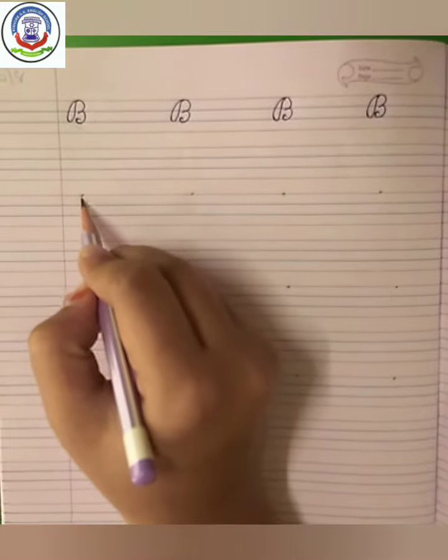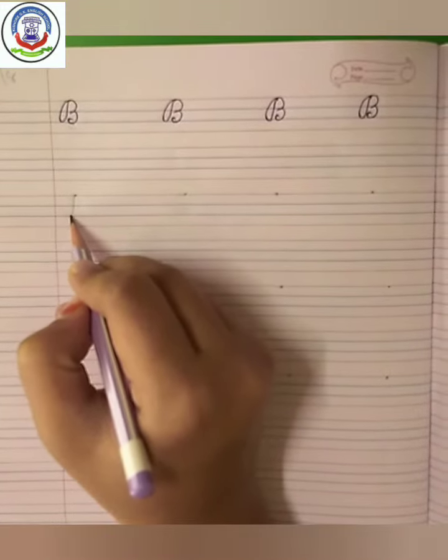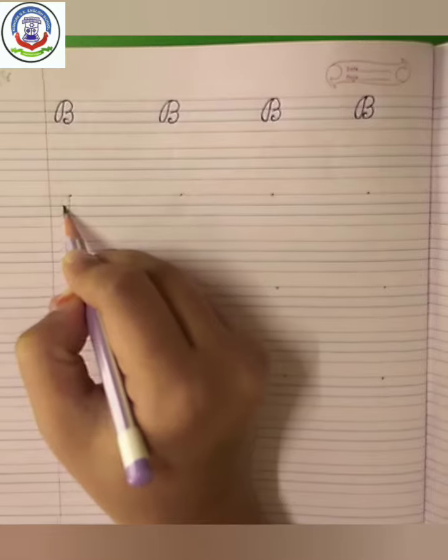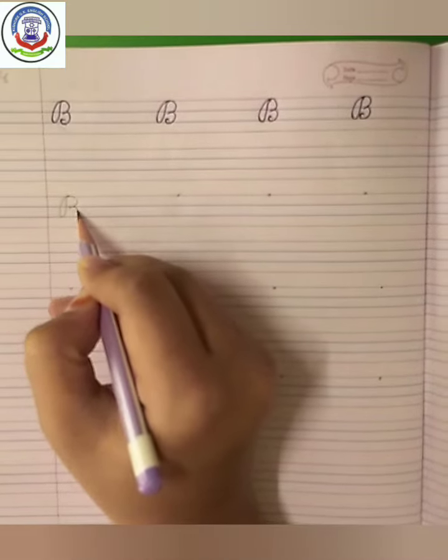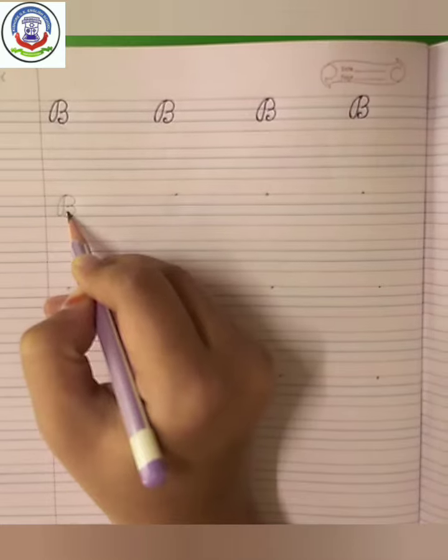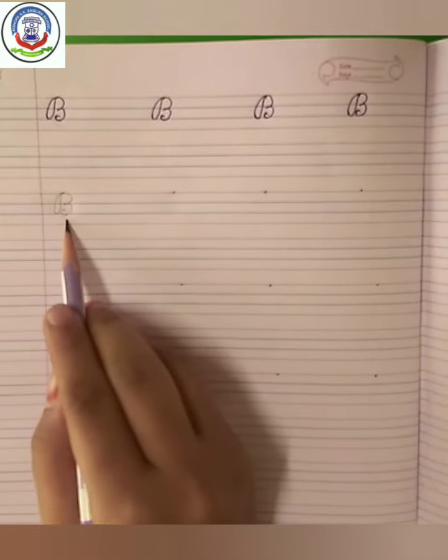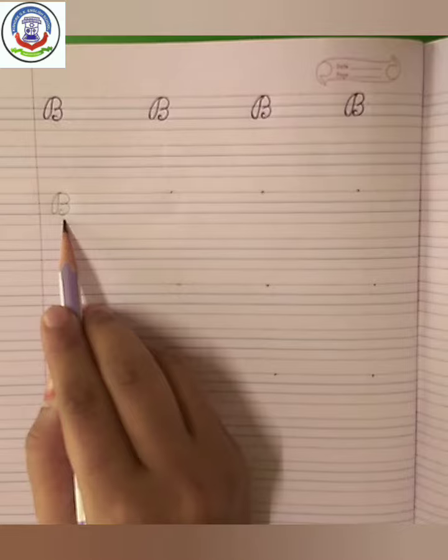First we make standing line and then go back side and make curve and make another curve like this. B says burr, burr burr ball.